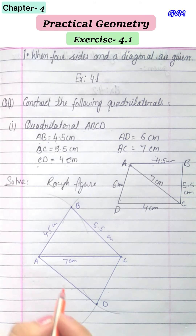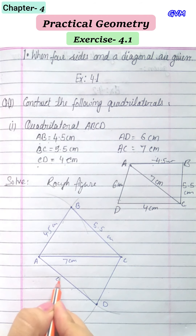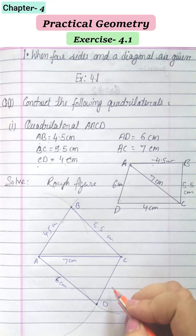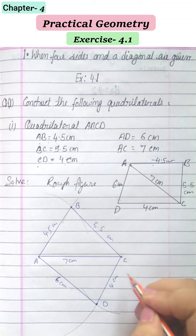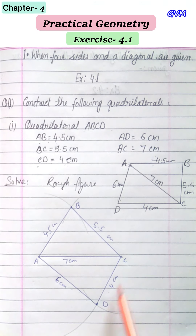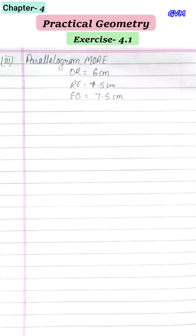The intersecting point of those two arcs is point D. Join AD = 6 cm and CD = 4 cm. This is the required quadrilateral ABCD. The second part of this question is similar to the first part.